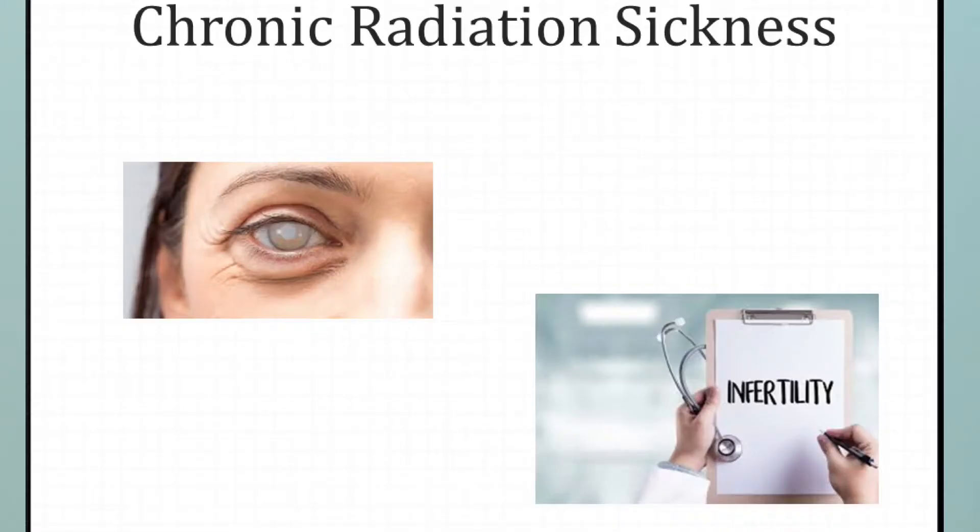Acute radiation sickness is not dangerous and is easy to cure and controllable. On the other hand, chronic radiation sickness occurs after one has been exposed to a high amount of radiation over months or years, or by continuous exposure to small amounts of radiation over time. Examples include cataracts and sterility — the inability to conceive a baby. Unfortunately, chronic radiation sickness is dangerous, difficult to cure, and may lead to death.